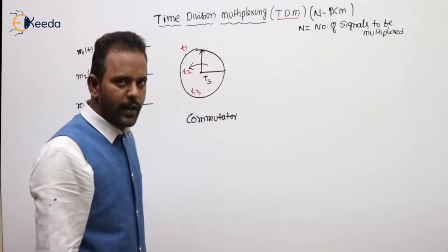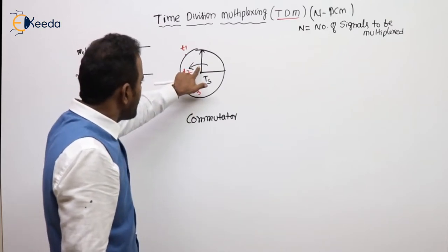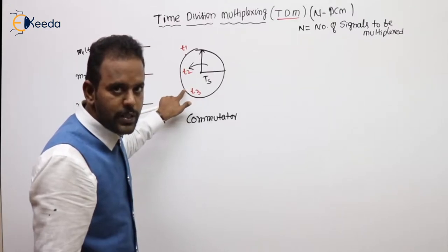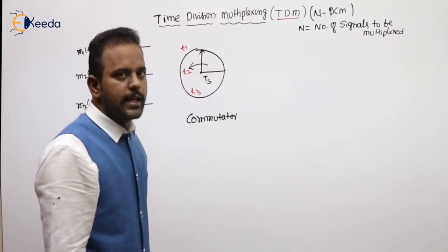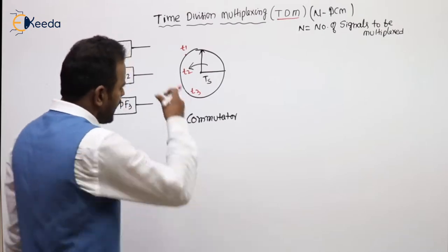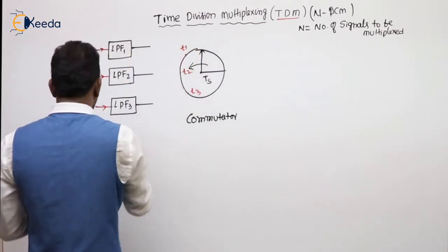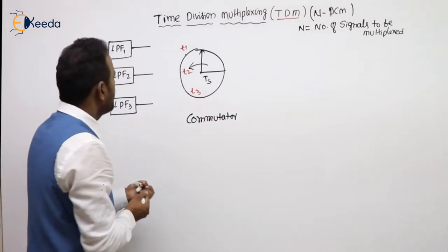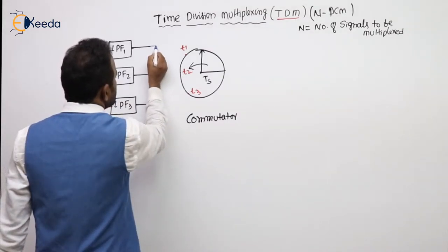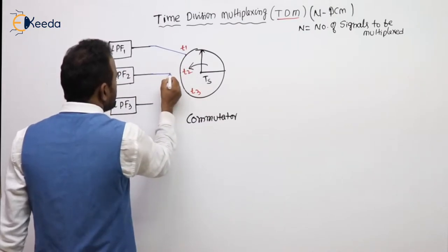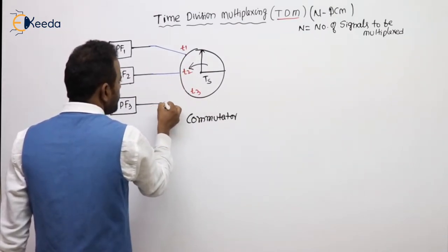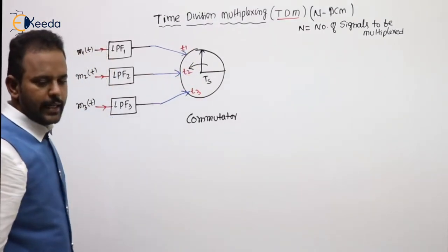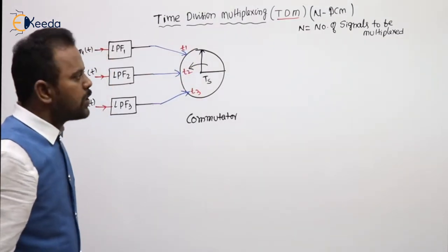What is the meaning of T1 here? The time taken by this switch coming to this point is T1 seconds, coming to the next point is T3 seconds — like some time slots will be there. Our messages are connected to those respective time slots: the first message is connected to T1, this is T2, this is T3.